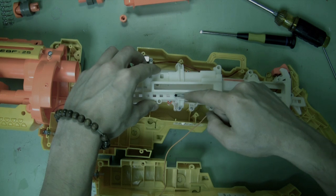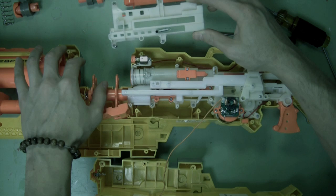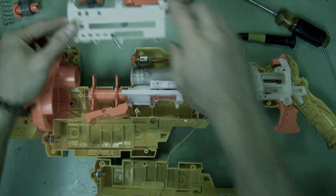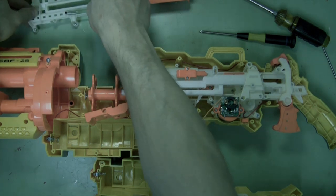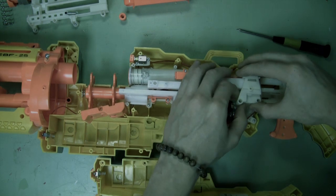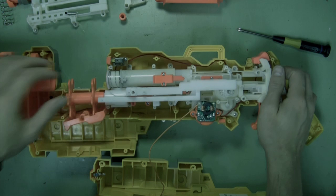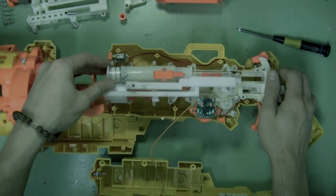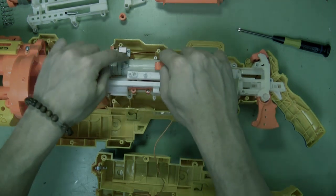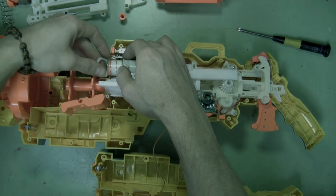And then unhook this spring and set aside the housing. To keep track of the screws, you can just leave them in the housing. You don't have to take them all the way out. All right, now you want to remove all this piece and the plunger assembly. Keep track of this collar and spring.